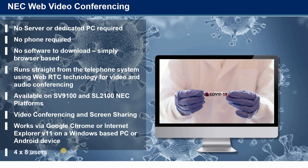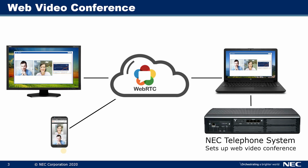You can have four groups of those eight users, so effectively you have 32 licenses of video conferencing built into your telephone system. The telephone system creates the video bridge, and you can send out a link to bring in internal or external parties. This isn't just for internal use — you can send the link out to your customers, suppliers, and remote workers to connect to a video call.